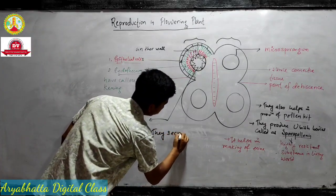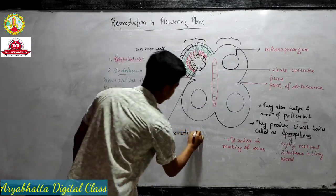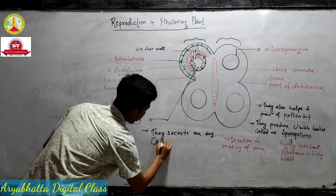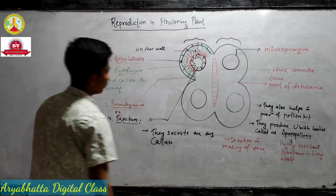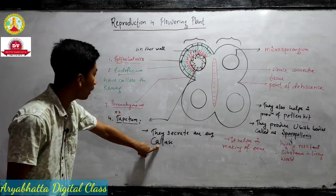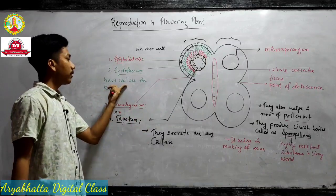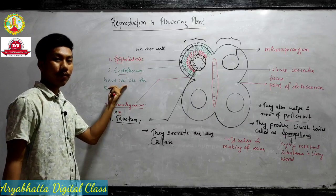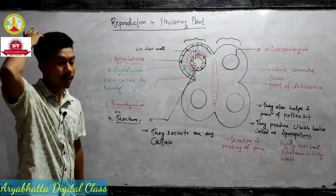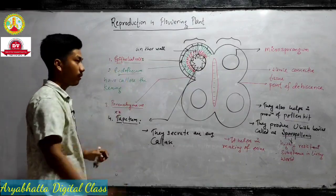Tapetum also secretes an enzyme called callase. Callase is an enzyme which helps in the degeneration of callose. So these are the layers present inside the anther: first is the epithelial cell on the surface, then the endothecium, then parenchyma, then tapetum.